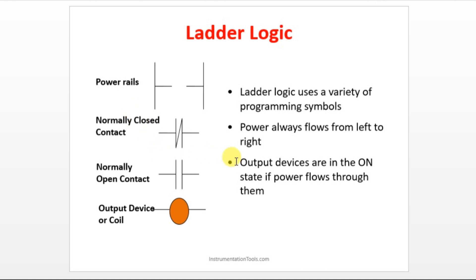We have three major instructions — the important terms when it comes to programming. Those are normally open contact, normally closed contact, and output coil. What is normally open contact? It is like a switch. Imagine you have a switch at your home. You will be turning on — your output will be on. If you turn off, your output will be off. That type of switch is called as normally open contact.